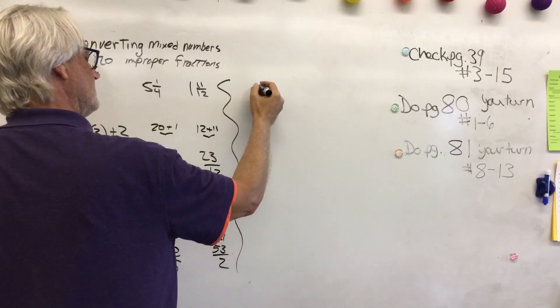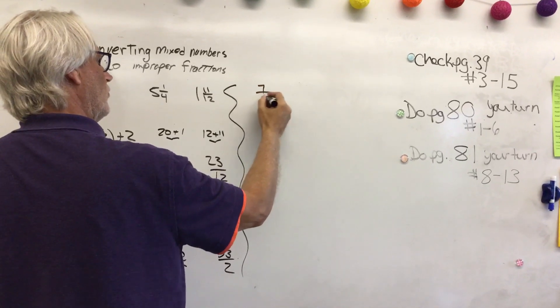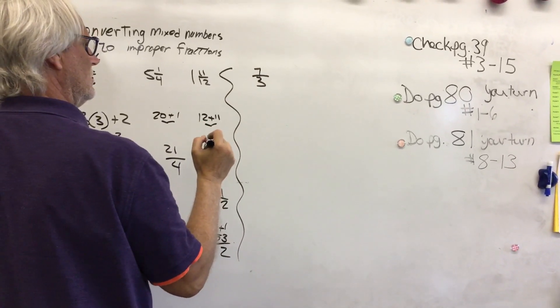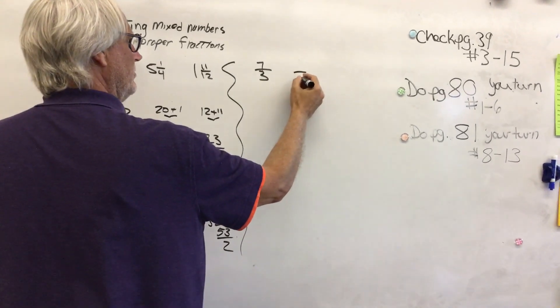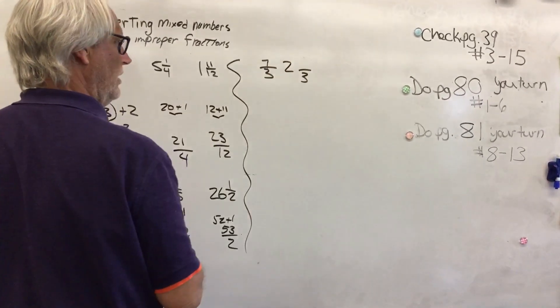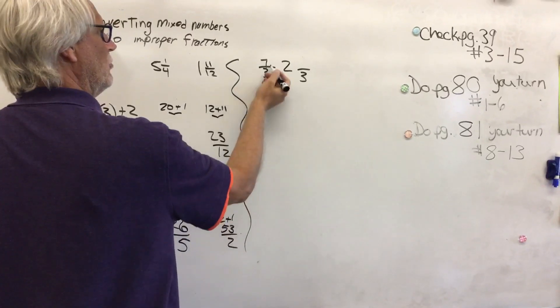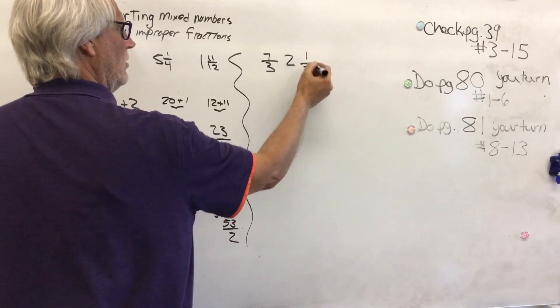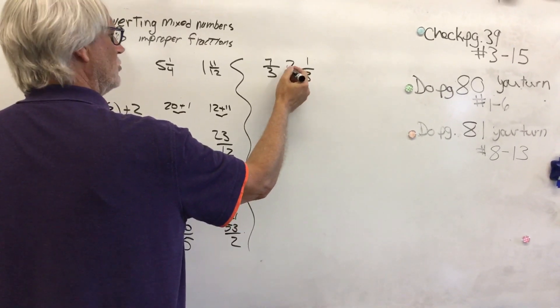So let's try 7 over 3. So I know my denominator is going to be 3. So 3 goes into 7, 2 whole times. And then how many more to get to 7? 1. So 2 and 1 third.